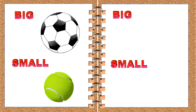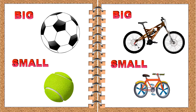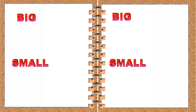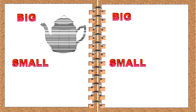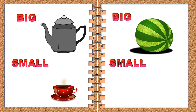The next example: this bicycle is big, this cycle is small. Let's look at some more examples. This kettle is big in size. This cup is small in size. This watermelon is big in size. This orange is small in size. So whenever we say big and small, we refer to the objects in terms of their sizes.